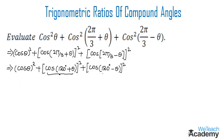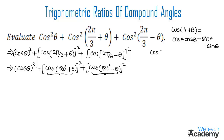This is in the form of cos(A + B) and cos(A − B). We already know the formula: cos(A + B) = cosA cosB − sinA sinB, and cos(A − B) = cosA cosB + sinA sinB.